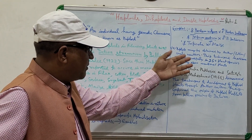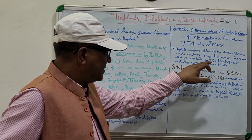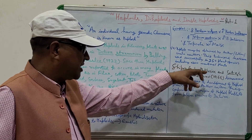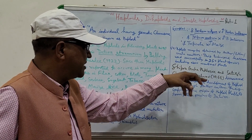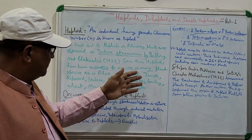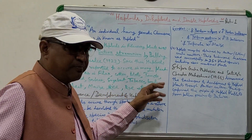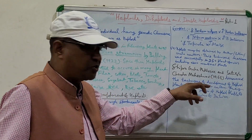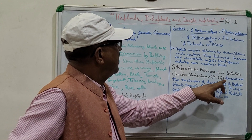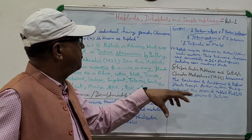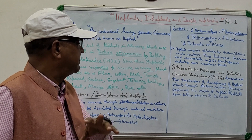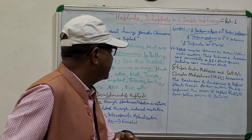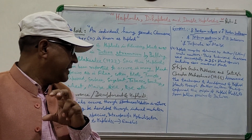Haploids may be obtained by anther culture, pollen culture, or ovule culture. This technique has been used successfully in 250 plant species, including those mentioned above. Sipra Guha and Sipra Guha Mukherjee and Satish Chandra Maheshwari in 1966 discovered the technique of developing haploid plants through anther culture. They confirmed the origin of haploid plantlets from pollen grains of Datura.